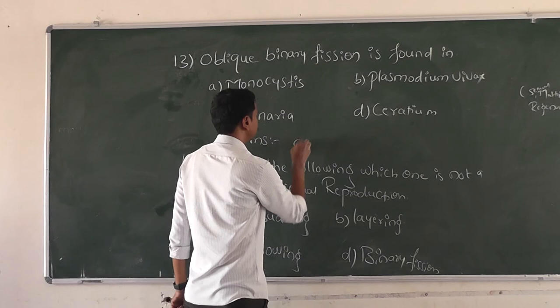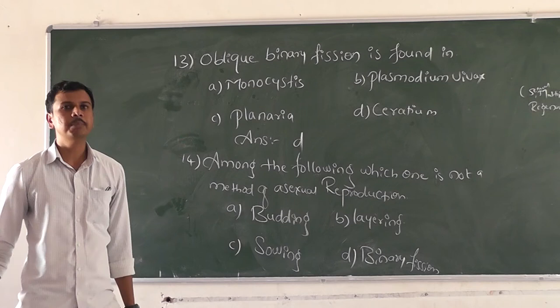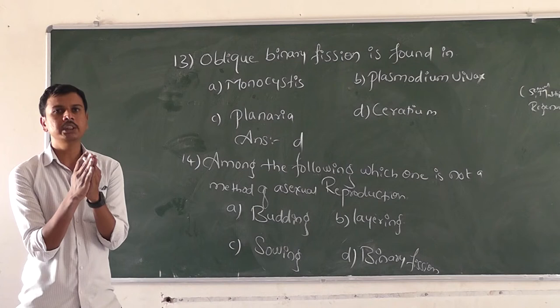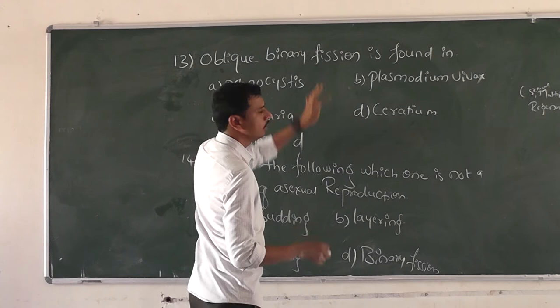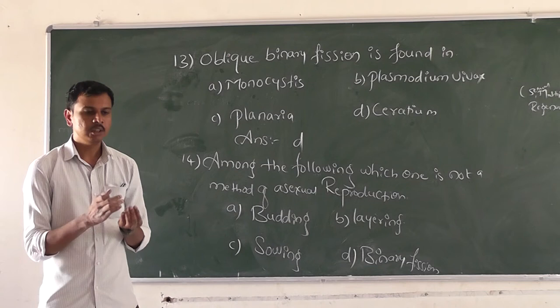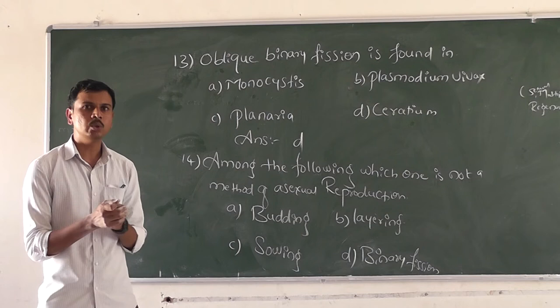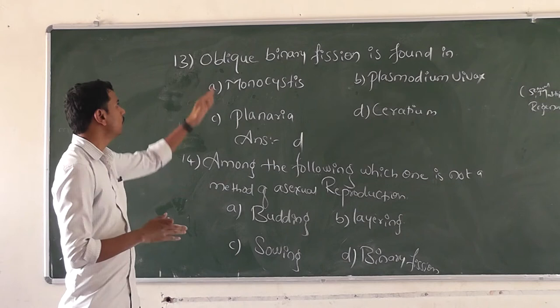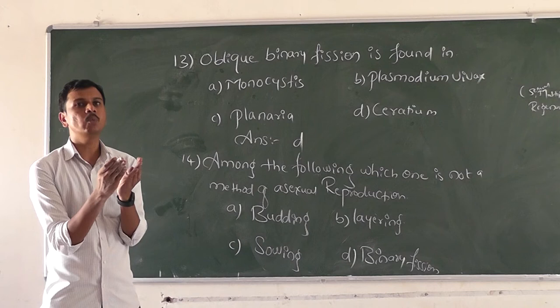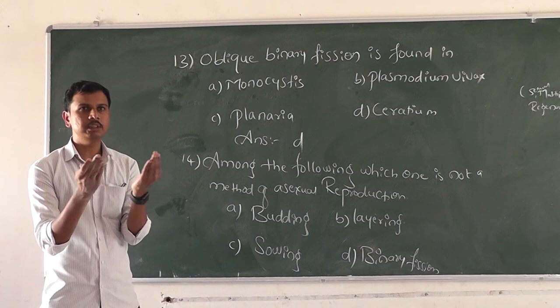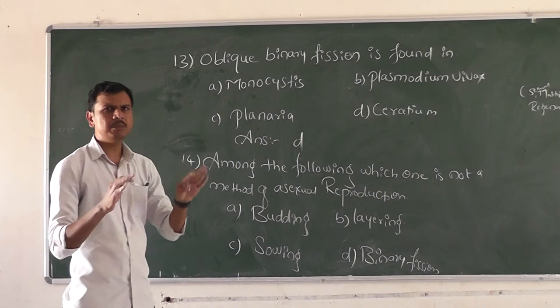Option D is the right answer. In oblique binary fission, longitudinal separation — otherwise called longitudinal division — of the organism takes place. Normally, binary fission means the nucleus breaks down, then the cytoplasm breaks down and they separate into two organisms. But in oblique binary fission, the cytoplasm separates first, then the nucleus, and we call this oblique binary fission.